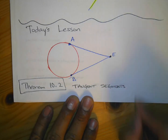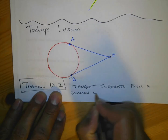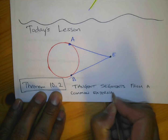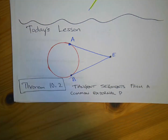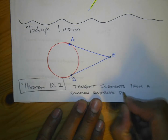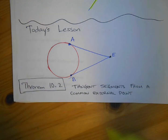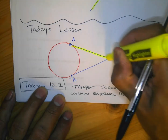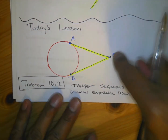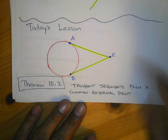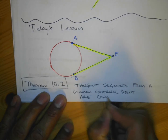Theorem 10.2 states: tangent segments from a common external point — they can't be coming from two different points. They have to come from one external point. So AE is a tangent segment because it's tangent to the circle at one point, and BE is also a tangent segment coming from that same common external point E — and they are congruent.